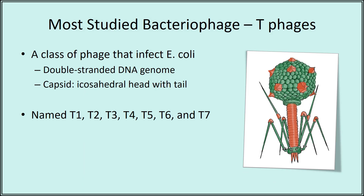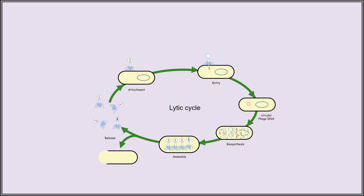The most studied bacteriophage are the T phages. These viruses infect Escherichia coli, and they have a double-stranded DNA genome packaged inside an icosahedral head. They have a tail section with six tail fibers, and they are non-enveloped. They are given the names T1 through T7.